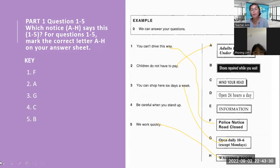Children do not have to pay. Letter A. Adults, 2.50. Under 12, it means the children are free.